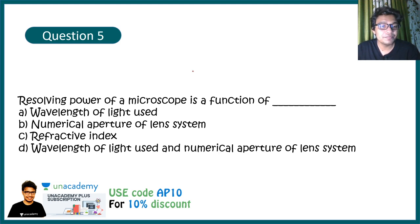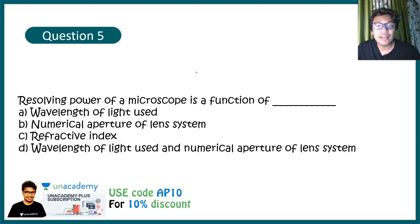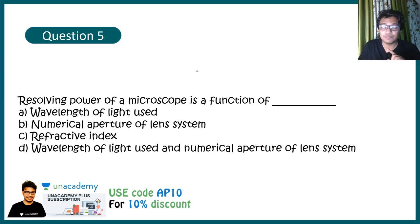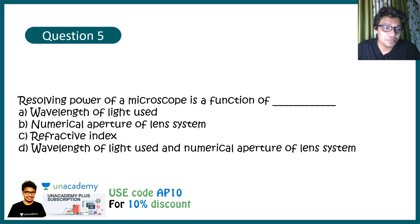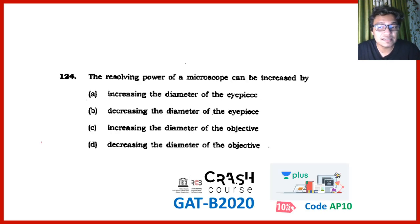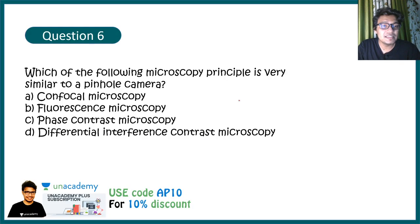Question five: The resolving power of a microscope is a function of — wavelength of light used, numerical aperture of the lens system, refractive index, or both wavelength and numerical aperture. Remembering the limit of resolution equation, it is proportional to lambda and inversely proportional to numerical aperture. So the last option is correct. A similar question was asked in JNUCDB 2018.